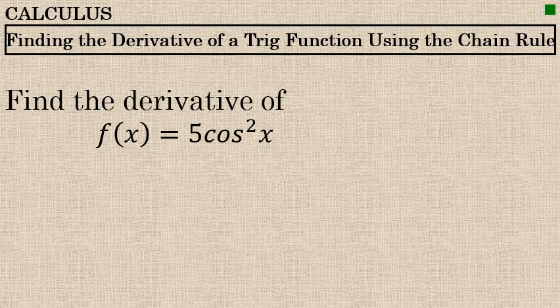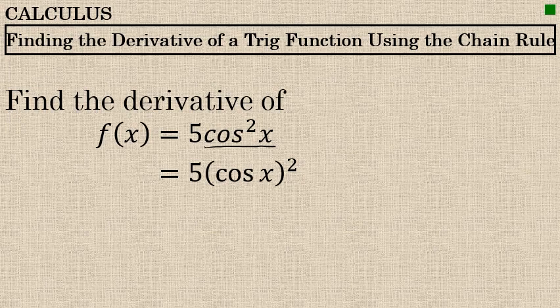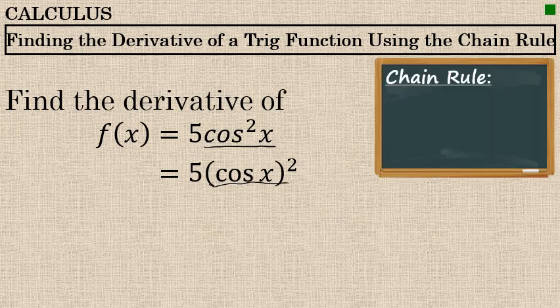The first step in finding the derivative of f(x) = 5·cos²(x) is to realize that cos²(x) is just another way to write (cos x)². When finding the derivative of cosine squared, it's better to write it in this form — it's a little easier to see that the chain rule should be required.